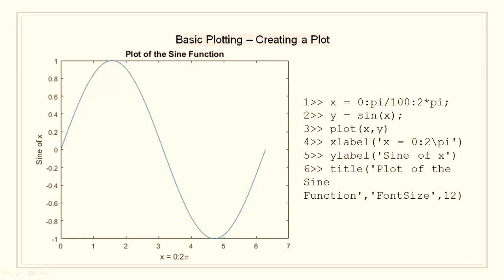I have created a vector x from 0 to 2pi with pi by 100 as incrementation. Similarly, I will create a vector y having values of sine of x. Then I will plot this sine using the plot function by passing x and y. Now I will add the x label and y label. The x label will say x is from 0 to 2pi and the y label will say sine of x. I will also add a title saying that this is the plot of the sine function.